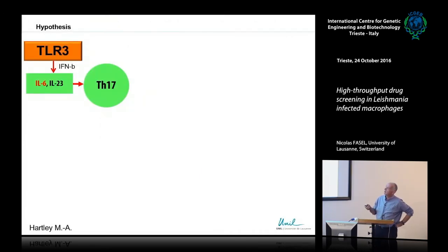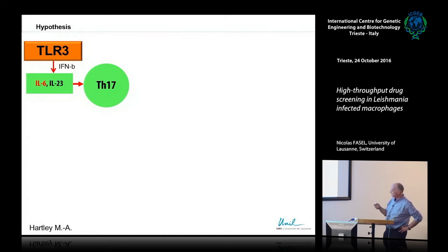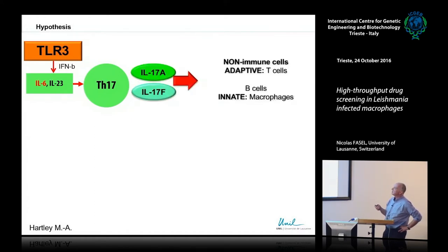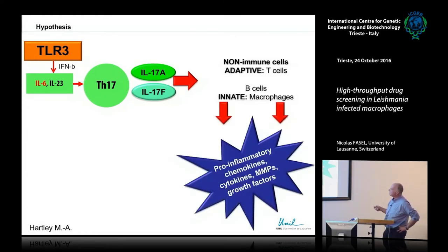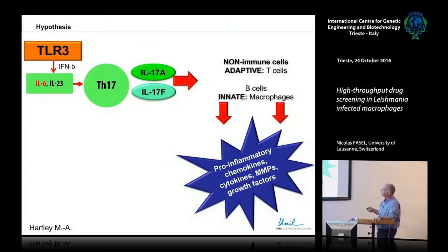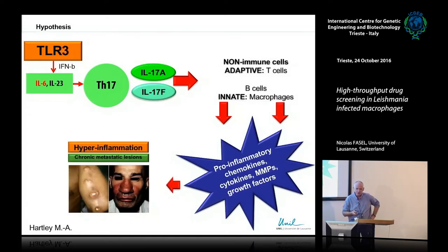Through TLR3 and interferon beta, we have production of interleukin-6 and interleukin-23, which act on TH17 cells. TH17 cells produce interleukin-17A and F — we concentrated on IL-17A as important. This interleukin acts on T cells, B cells, macrophages, and epithelial cells, working to increase the inflammatory response: producing additional pro-inflammatory chemokines and cytokines, inducing matrix metalloprotease and growth factor production. At the end, you could imagine ending up with hyperinflammation.